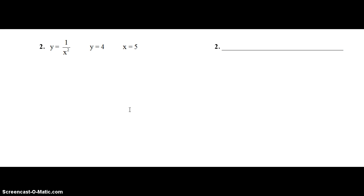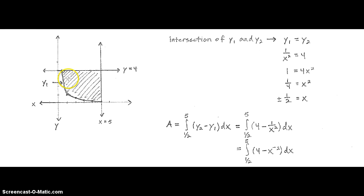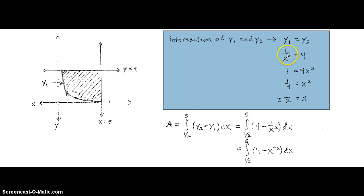Number two has the function y equals one over x squared again, but instead of y equals zero, we have y equals four, and the only other boundary given is x equals five. We don't have both x values, so we need to determine where one over x squared intersects with four. I would solve this by multiplying both sides by x squared to get one equals four x squared. Dividing by four and then square rooting both sides gives x equals plus or minus one-half — don't forget the plus or minus any time you square root when solving.